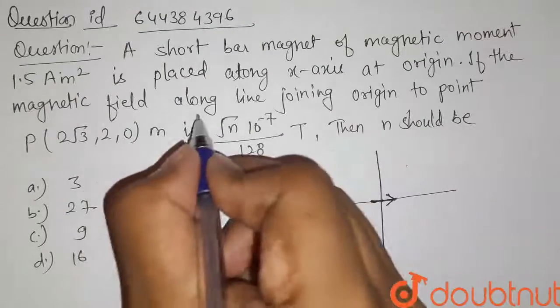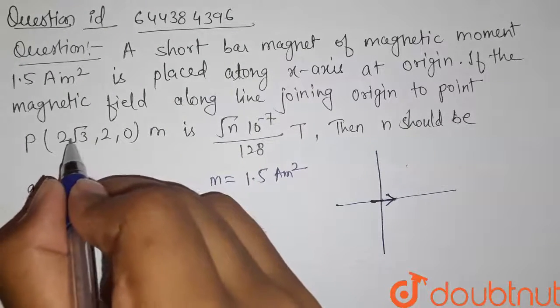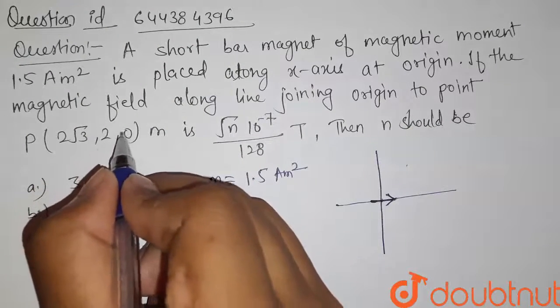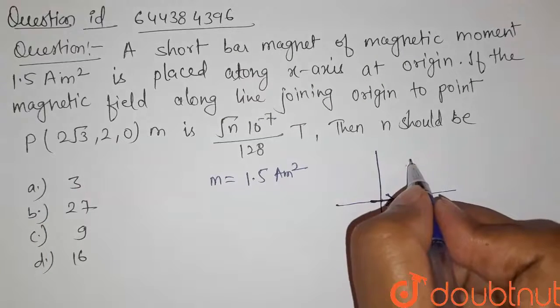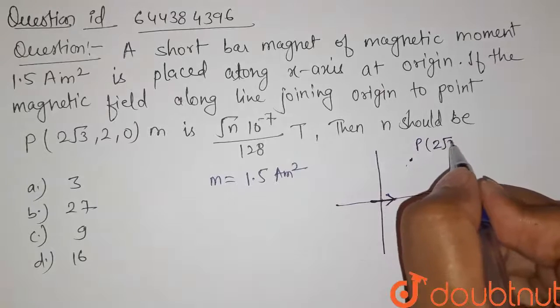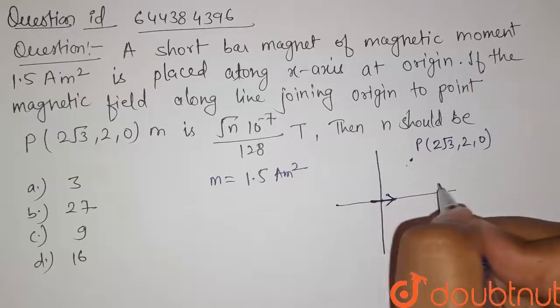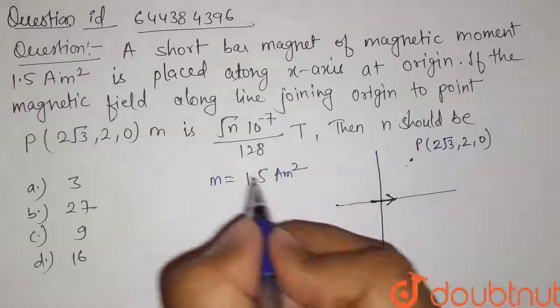If the magnetic field along the line joining origin to point P, the coordinates given here 2√3, 2 comma 0. So let us take this is the point P, its coordinates are 2√3, 2 comma 0. That means it is lying in xy plane.